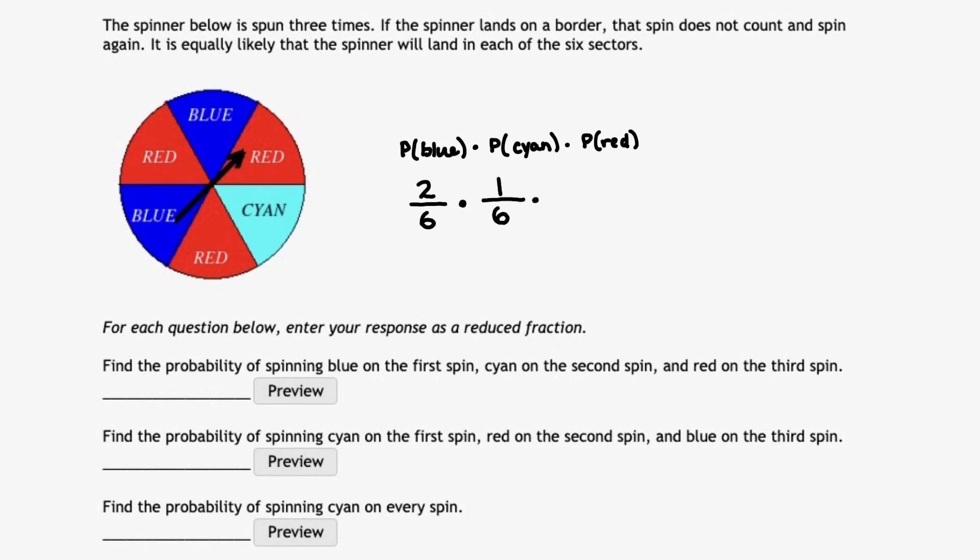And finally, let's take a look at the probability of getting red. Notice on our spinner, if we spin it, there are three different reds, and there are six total sectors in the whole thing.